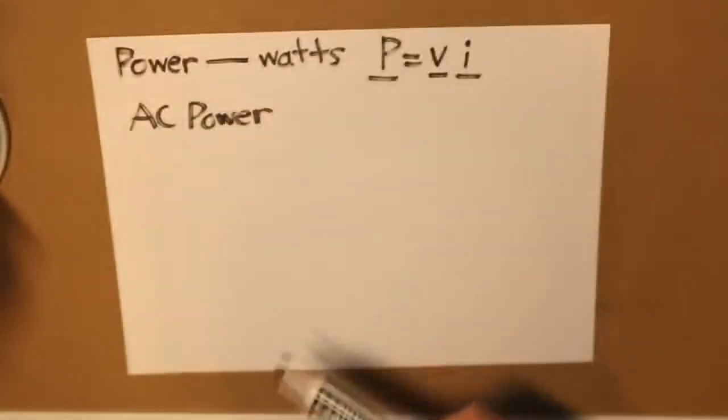So how do we explain this? Now AC power, P equals VI, we need a more specific definition to define what AC power is.